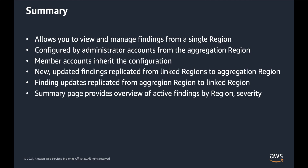To summarize, cross-region finding aggregation allows you to view and manage all of your findings from a single region. It is configured by administrator accounts. Member accounts inherit the administrator account's configuration. New and updated findings are replicated from the linked regions to the aggregation region, and updates that occur in the aggregation region are also replicated to the linked region where the finding originated. In the aggregation region, the Summary page provides an overview of active findings by region and severity.